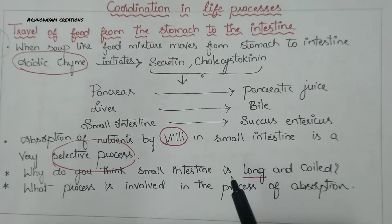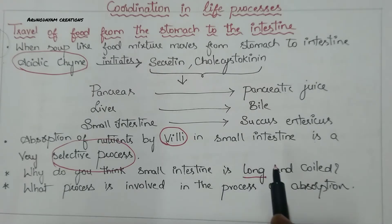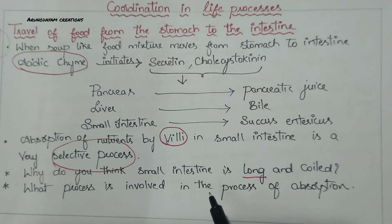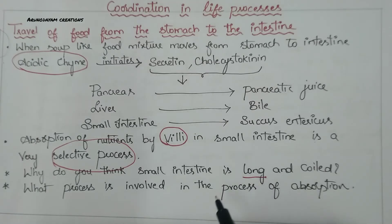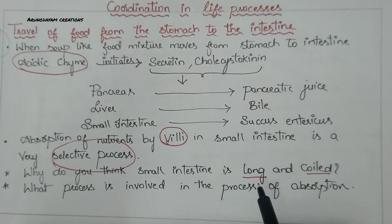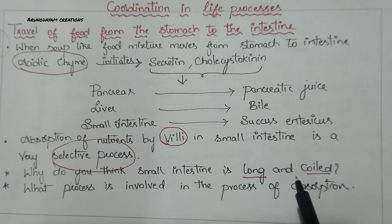The next part after the small intestine is the large intestine. The small intestine needs to absorb essential nutrients and water. For complete digestion and for complete absorption of nutrients, the small intestine is very long in nature. It is coiled in order to save space in our body, because it is longer than our body length.